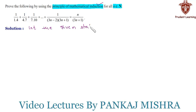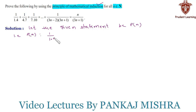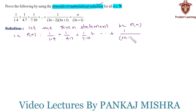Let the given statement be P(n), such that 1/(1×4) + 1/(4×7) + 1/(7×10) + ... all the way up to 1/((3n−2)(3n+1)) equals n/(3n+1).